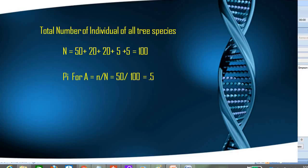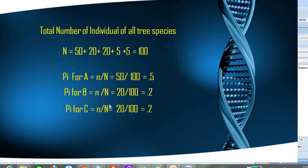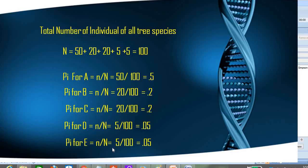For species B, the number of individuals was 20, so pi = 20/100 = 0.2. For species C, 20 individuals gives pi = 20/100 = 0.2. For species D, 5 individuals gives pi = 5/100 = 0.05. And for species E, 5 individuals gives pi = 5/100 = 0.05.